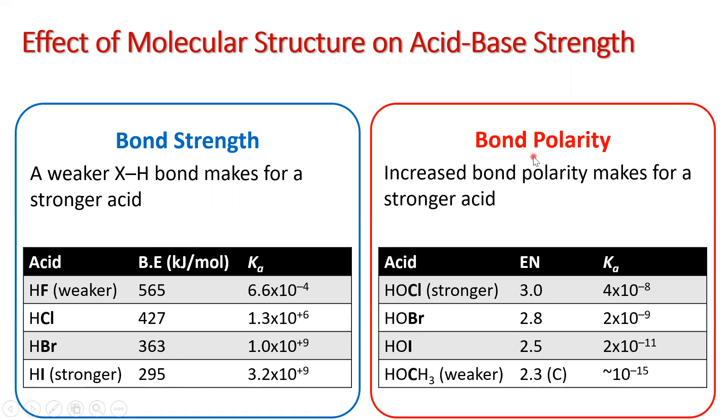When we look at polarities, as we increase the bond polarity, we increase the strength of the acid. So if we were to look, the electronegativity difference is decreasing when we go from chlorine to bromine to iodine to carbon,